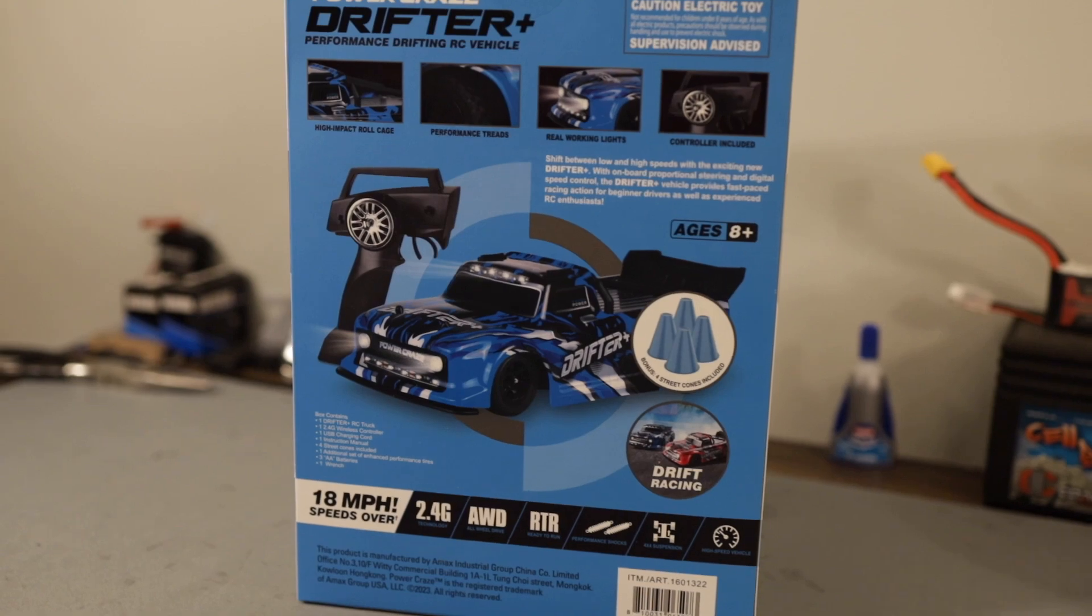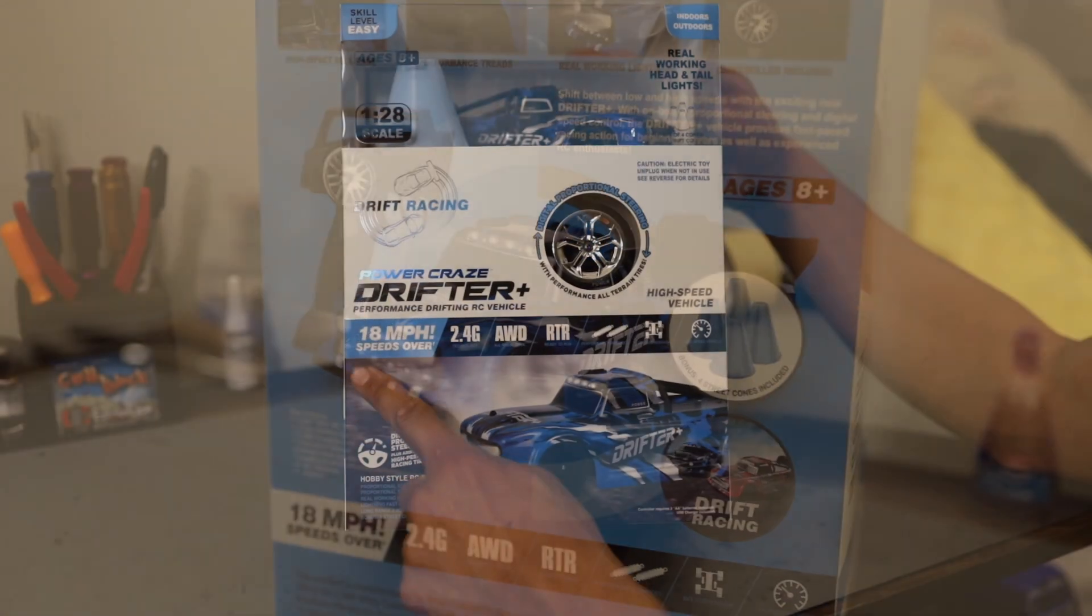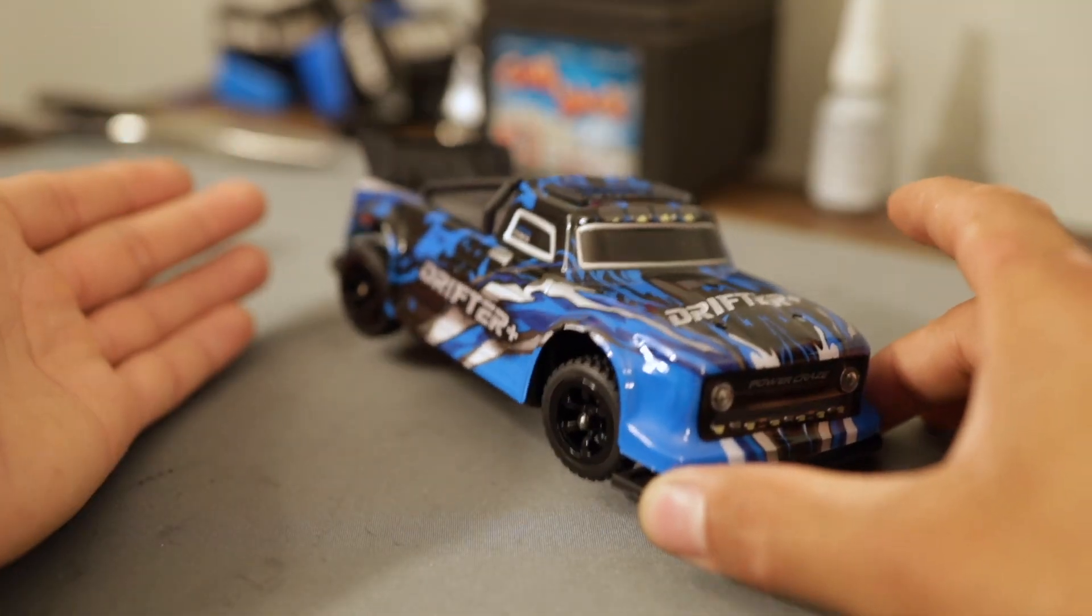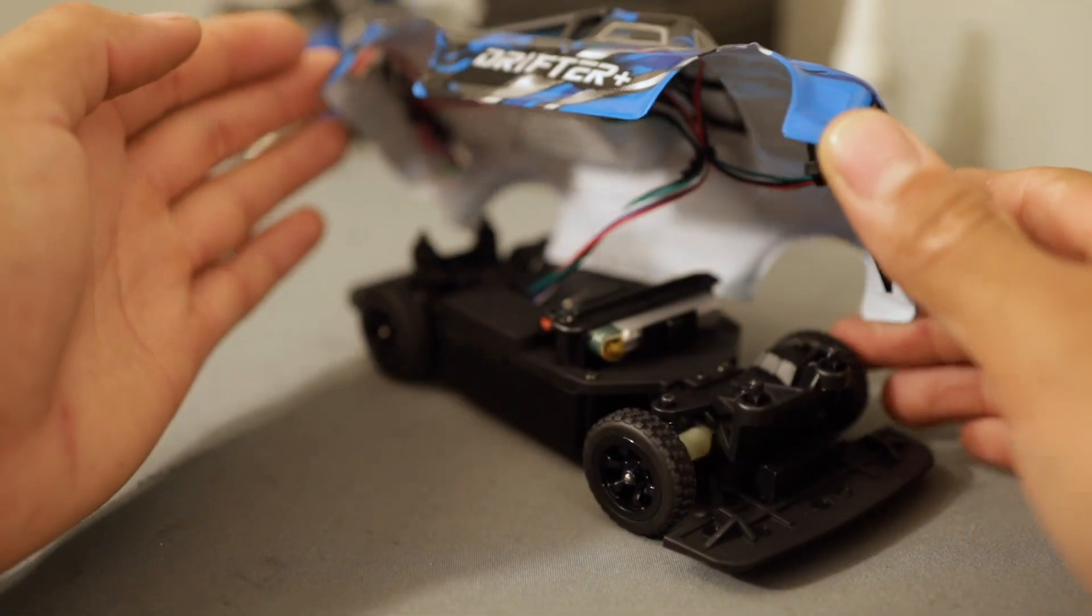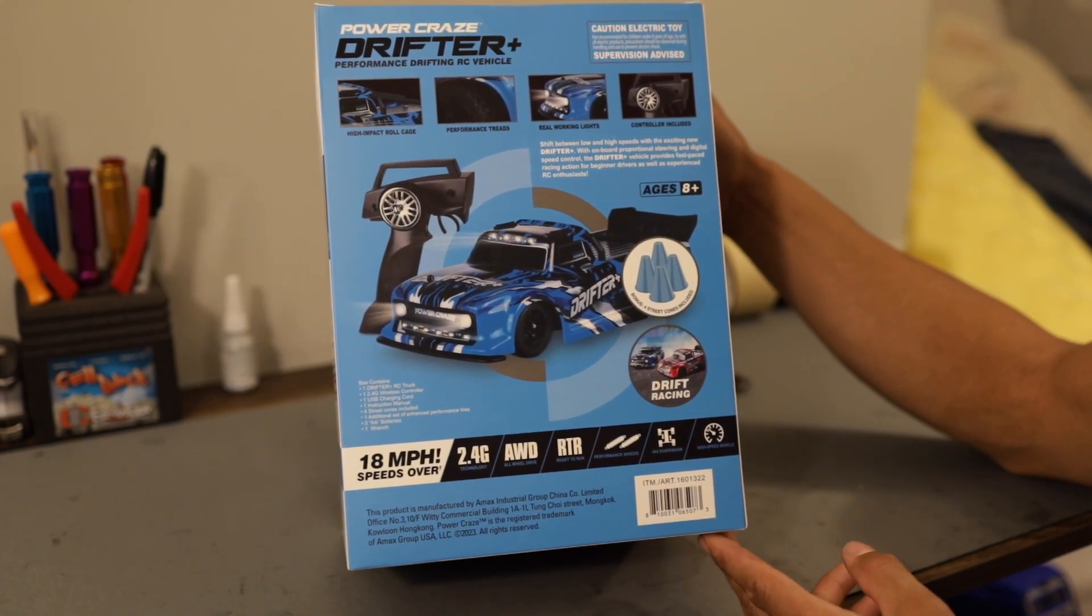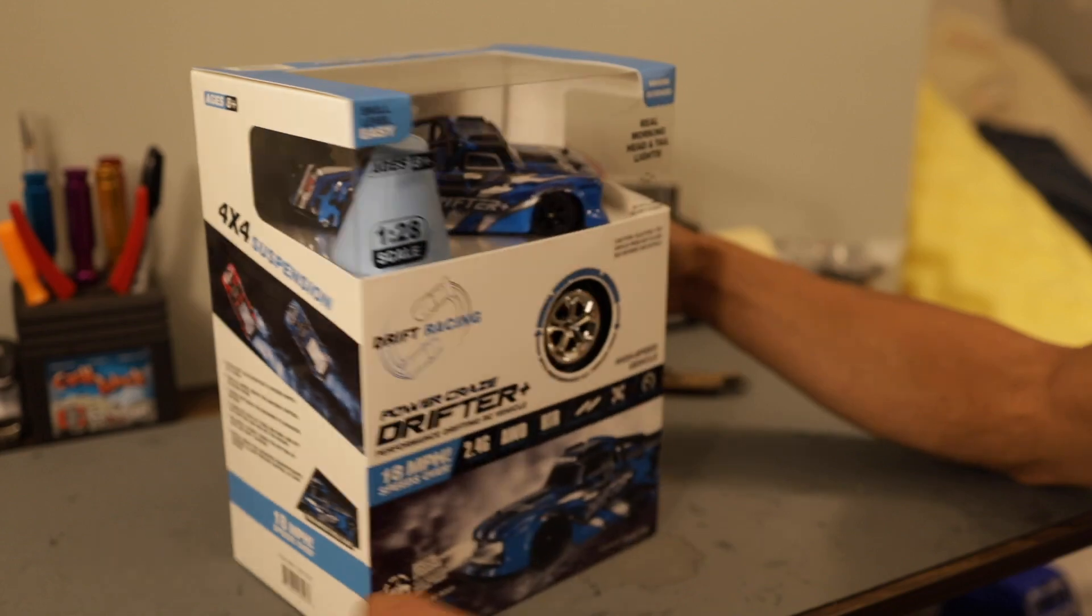This was a Costco buy, bought this thing for like $28, 18 miles per hour speeds with an asterisk. We're going to check this thing out, see what all it comes with, see if we can get this battery charged up. Next episode, you better believe we're going to be hitting that 18 mile an hour mark. Please hit that like button, hit that subscribe button, and let's get into it.